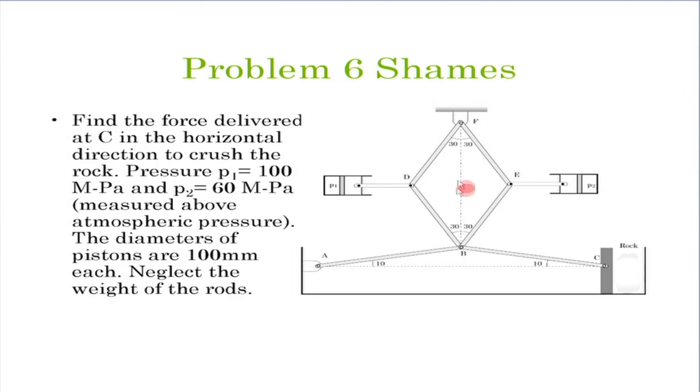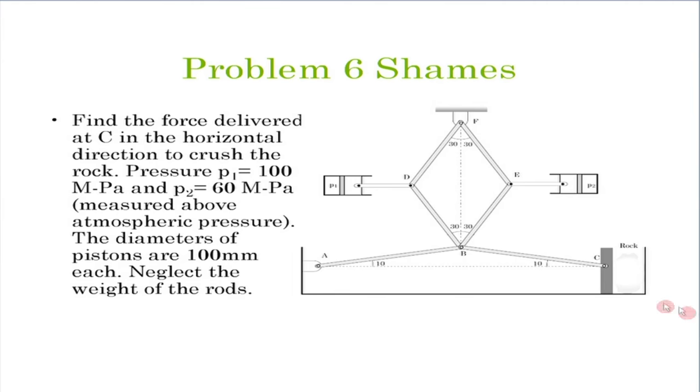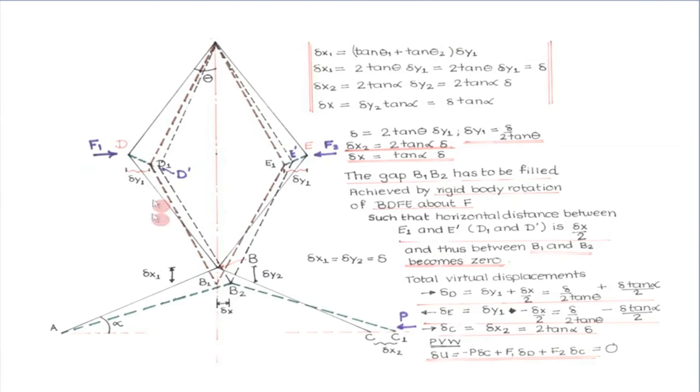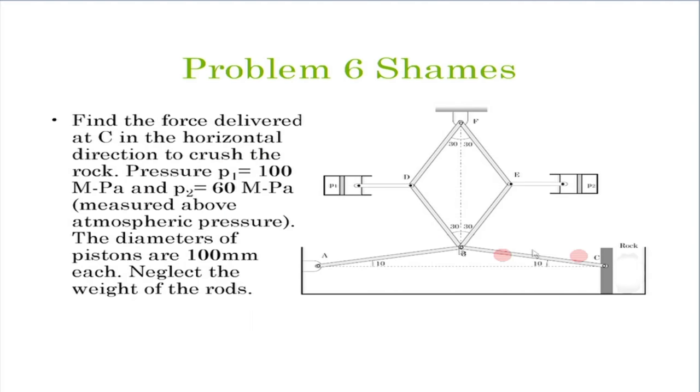A disclaimer: this problem is actually easier solved using Newton's laws. But it is given precisely to show what possible virtual displacements can be present in a system — demonstrating the different mechanism geometry changes and how to incorporate them all together. The key is recognizing what mechanism the assembly collapses to when a support is removed, then using that mechanistic collapse to find virtual displacements and apply the principle of virtual work.